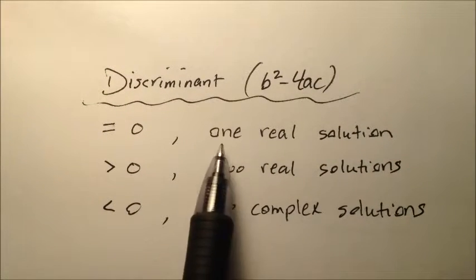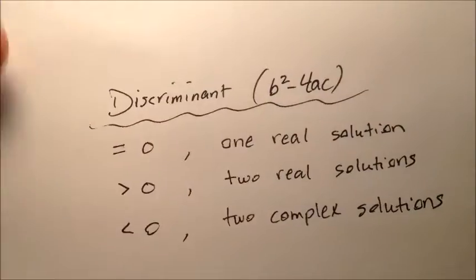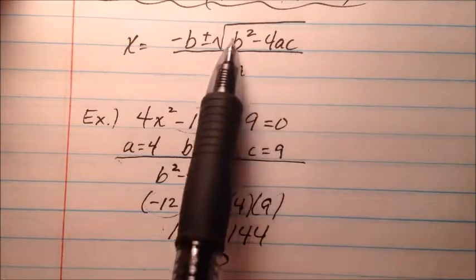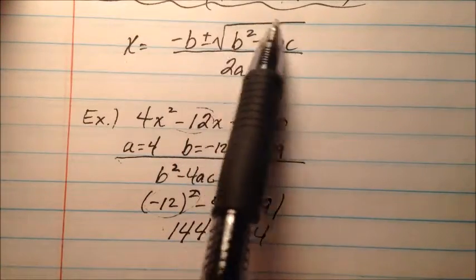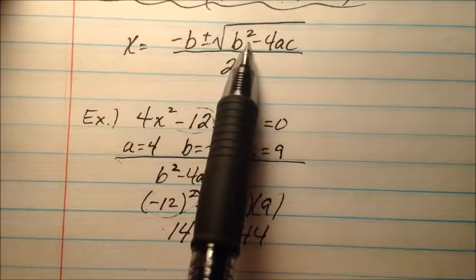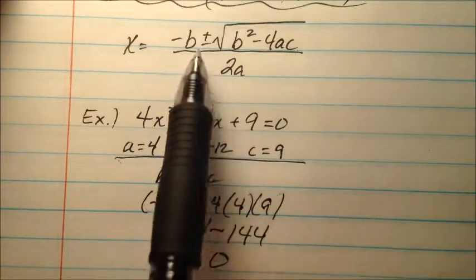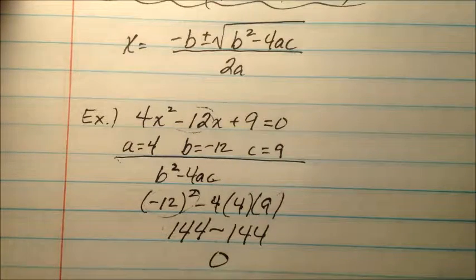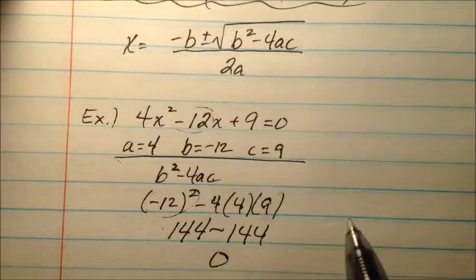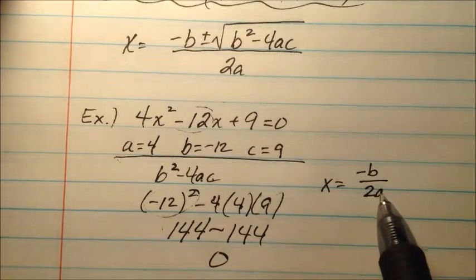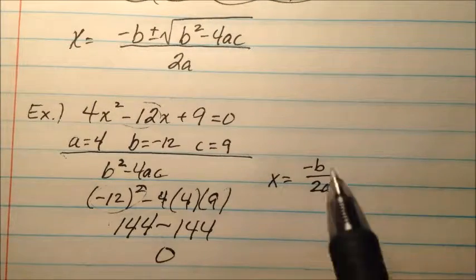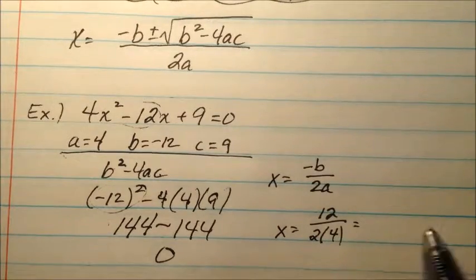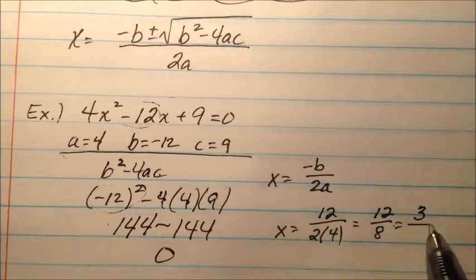Why does a discriminant of zero yield only one solution? Because we're taking the square root of zero, which is zero. Adding or subtracting zero doesn't change the value, so the solution is just negative b over 2a. That gives us 12 over 2 times 4, which is 12 over 8, or 3 halves.